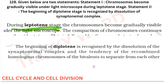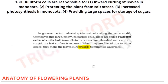Bulliform cells are responsible for which of the following? This is from your anatomy of flowering plants. Bulliform cells are responsible for curling of leaves — curling in virtue of minimizing loss of water. Option one is correct.